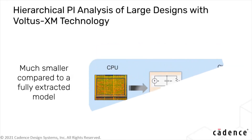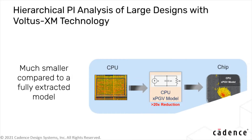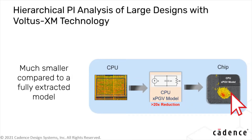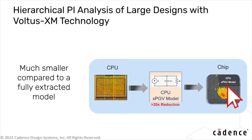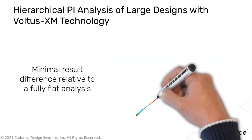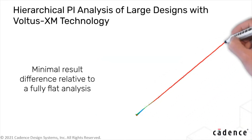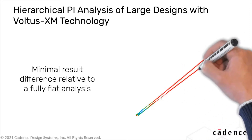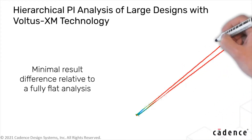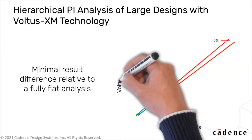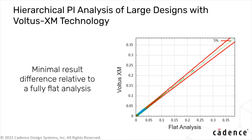The XPGV model is smaller compared to the fully extracted block, and when used in the chip-level analysis, it can help significantly reduce runtime and memory. The modeling methodology used in Volta's XM ensures minimal result difference relative to a fully flat analysis.